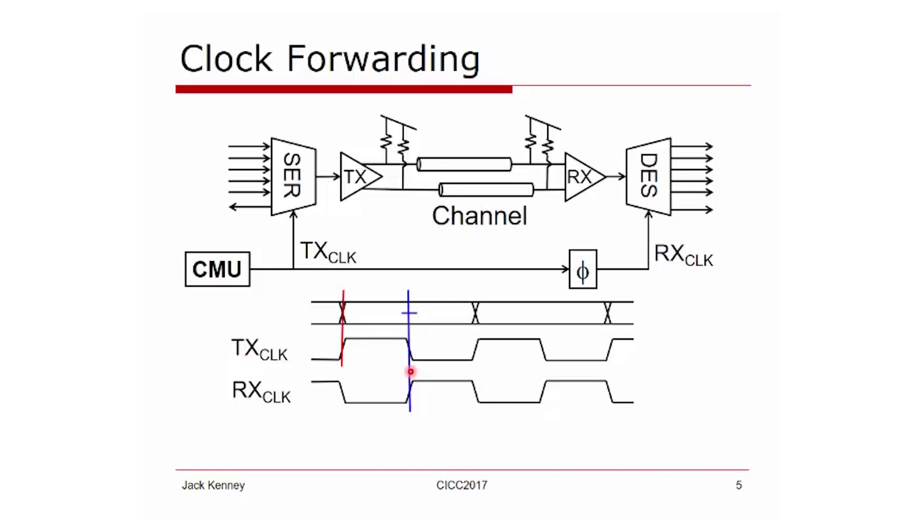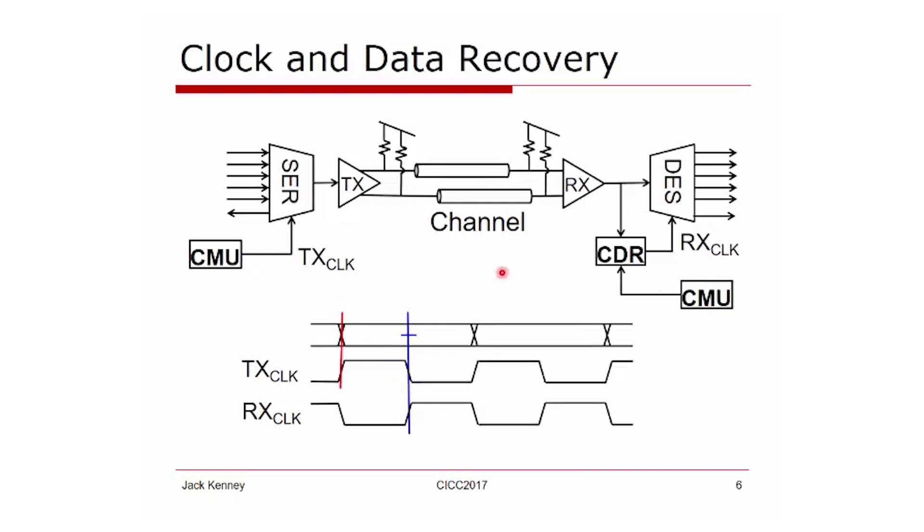Not all systems provision for a forwarded clock because that means additional wires and power. So what do you do when you're not getting the clock from the transmitter to the receiver? In that case, we introduced the concept of clock and data recovery, otherwise known as a CDR.